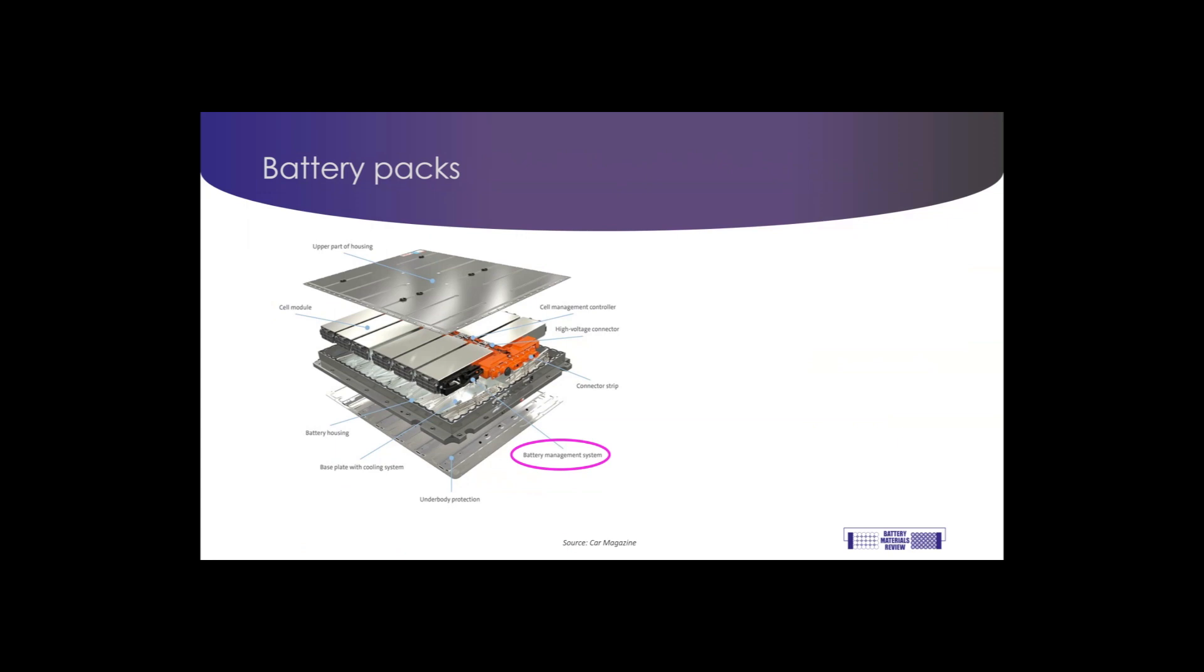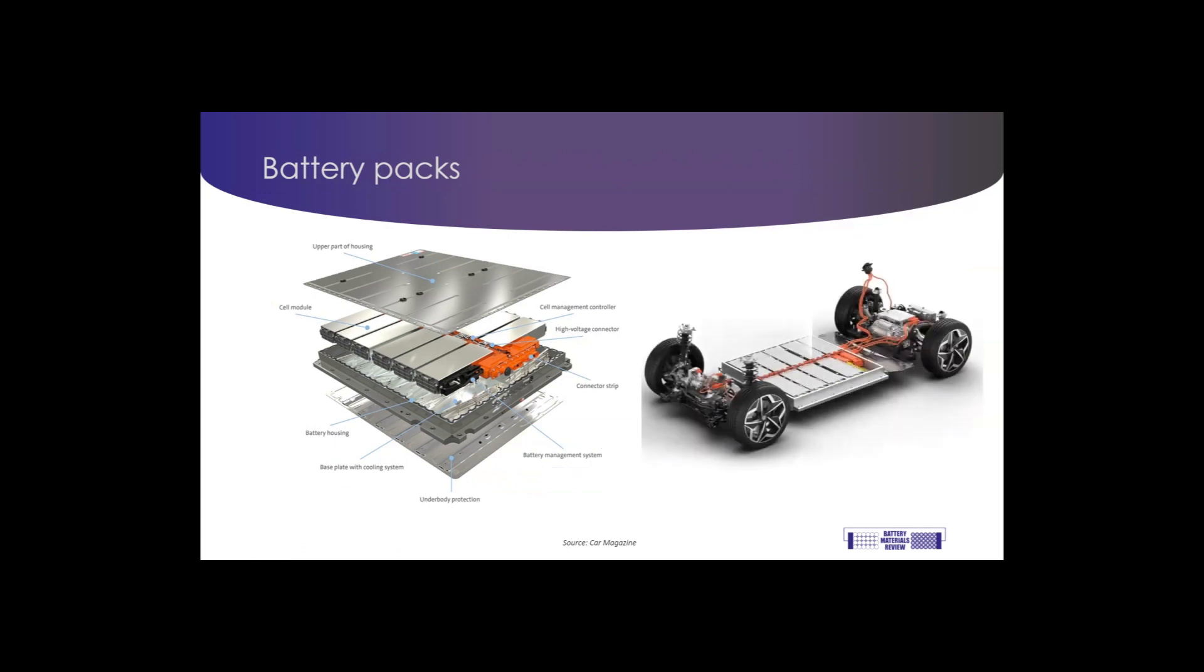So, in terms of materials usage, the raw materials which make up the cells may be only a fraction of the weight of the overall battery pack, which may contain significant additional amounts of copper, aluminium, and steel. This picture shows how the battery pack fits with an electric car.